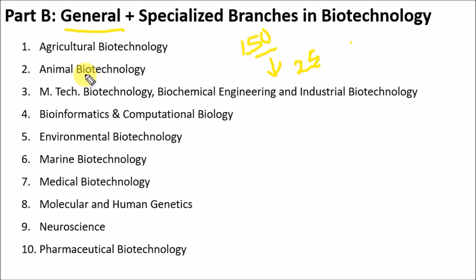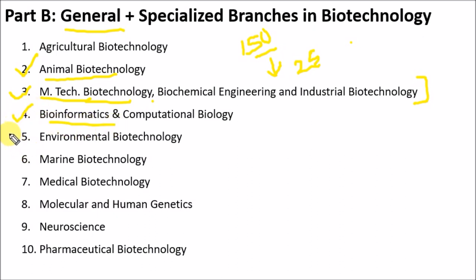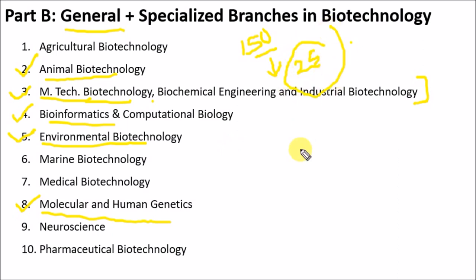I recommend selecting specialized courses from your master's or bachelor's degree background. For students preparing for GATE Biotechnology or GATE Life Sciences, I suggest selecting: animal biotechnology, M.Tech biotechnology and biochemical engineering (bioprocess engineering), bioinformatics, environmental biotechnology, and molecular and human genetics. Reading just these five chapters thoroughly will get you 25 questions easily as they carry equal weight in Part B.